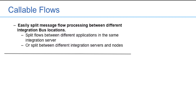The new Callable Flows feature first appears in IBM Integration Bus version 10.0.0.4. Callable Flows allows you to easily split message flow processing between different integration bus locations. You can split your flows between different applications in the same integration server or between different integration servers, which can also be different integration nodes.